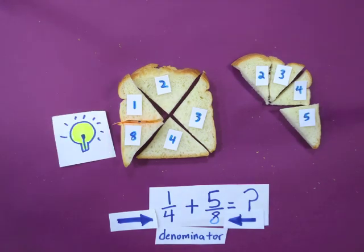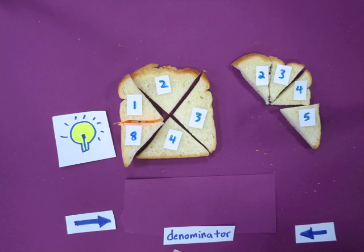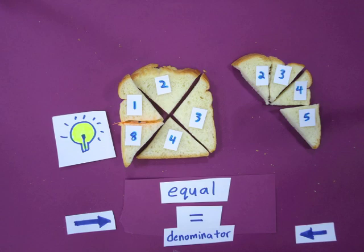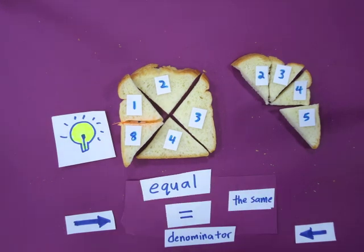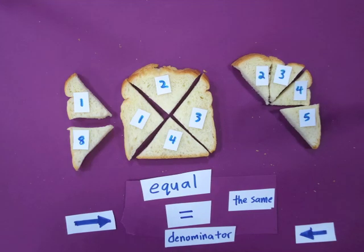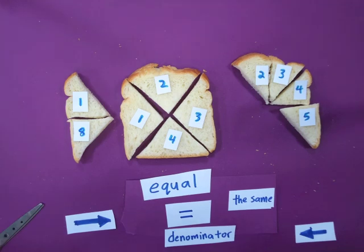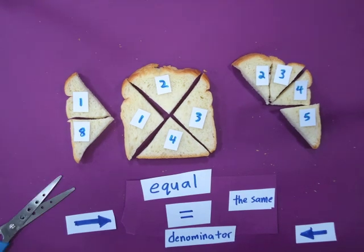Notice that in the denominator for the two fractions, the numbers are different. This is why we cannot add these two fractions yet. We've got to make the denominators equal. A synonym for equal is the same. The toast on the left should have eight equal parts instead of four equal parts as it is now. Let's divide those four slices into eight equal slices.